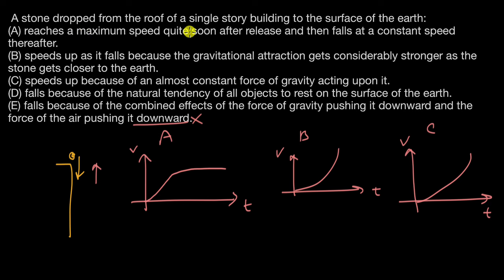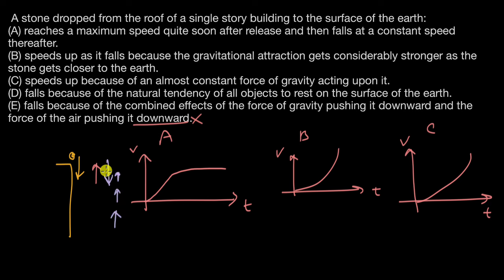Option A says the stone reaches a maximum speed quite soon after release and then falls at a constant speed. This could make sense: if there is some acceleration initially due to gravity, and then air resistance increases as the stone gains speed, balancing the gravitational force, there would be no net force, no acceleration, and the stone would fall at a constant speed.